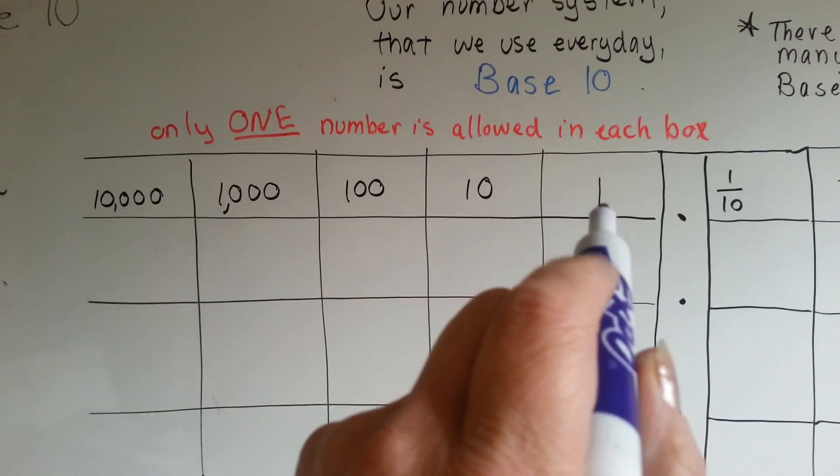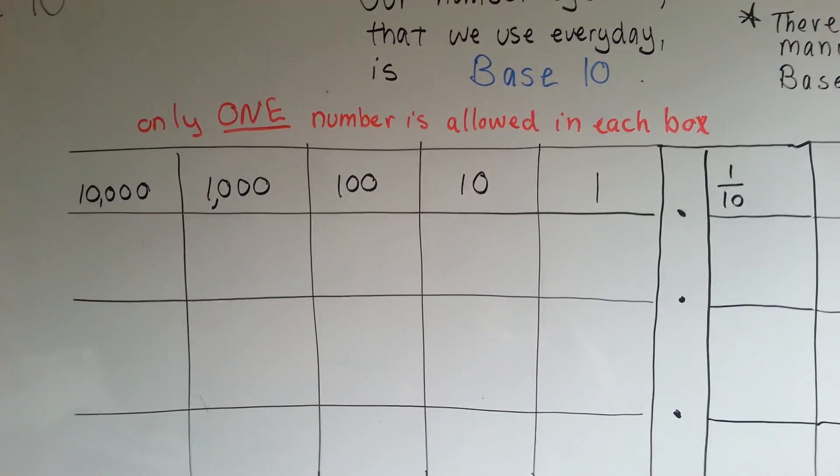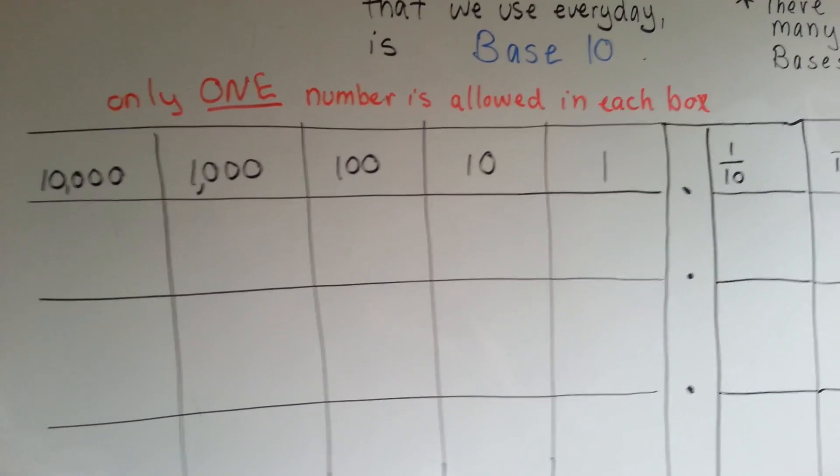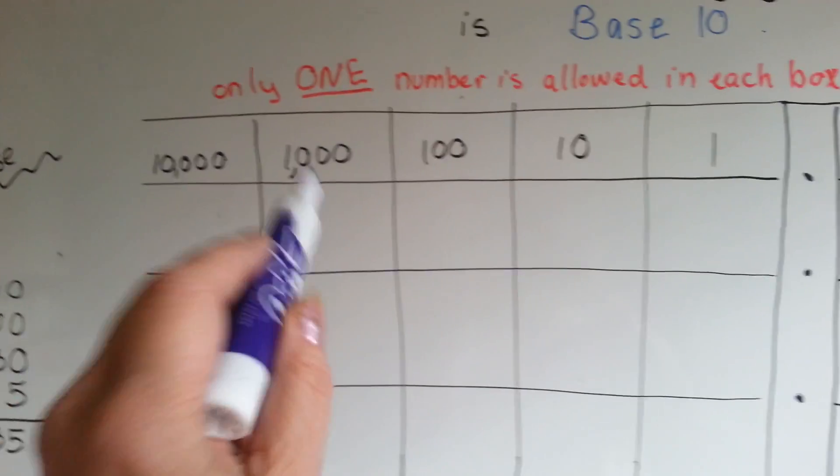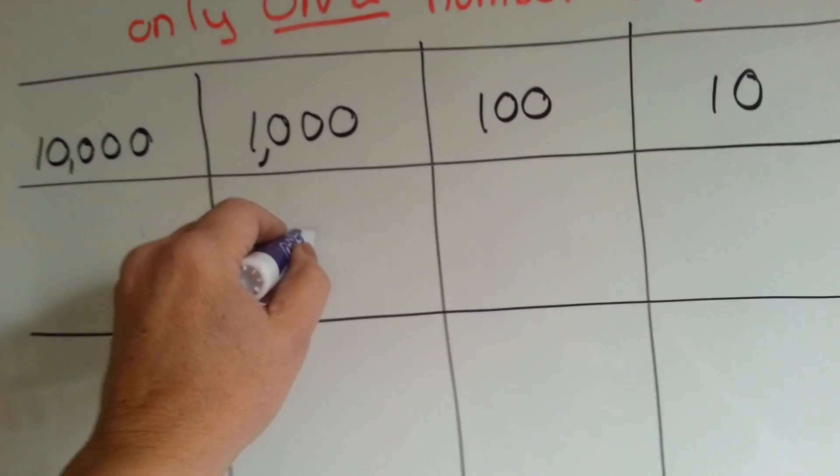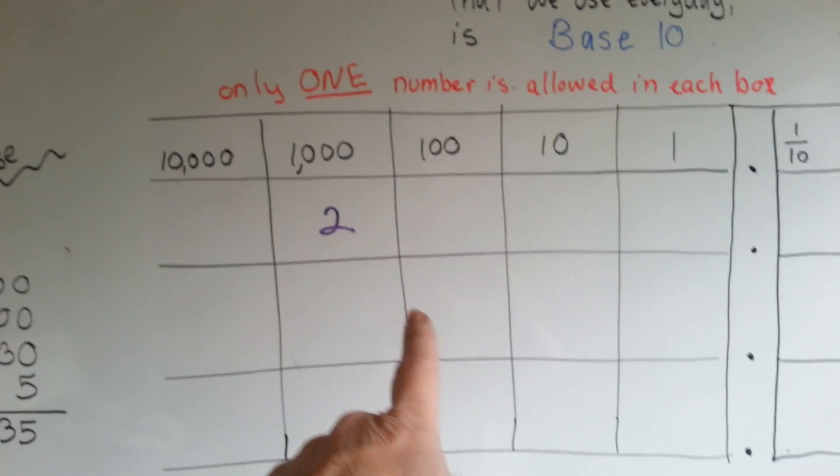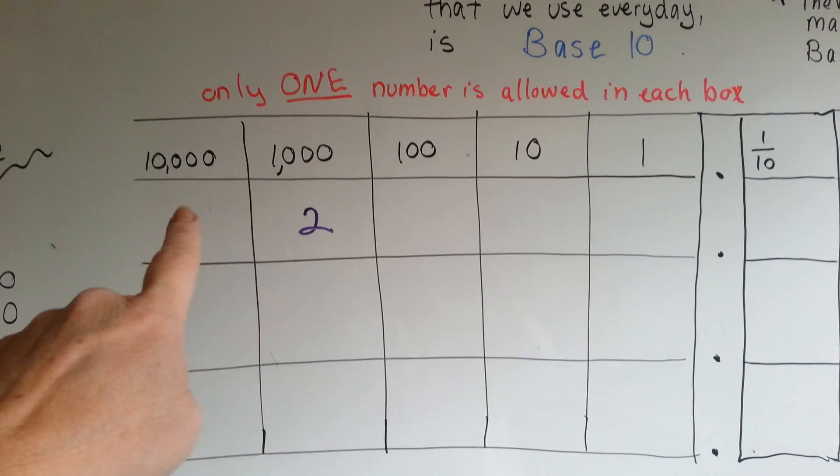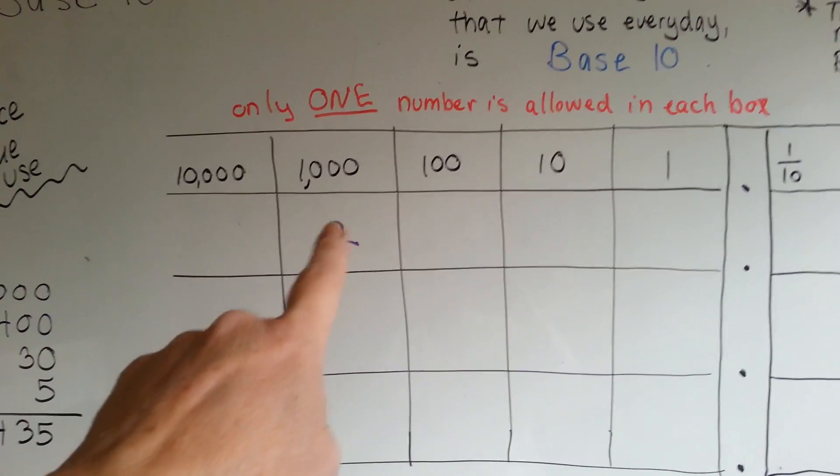So base ten means the number system and place value is based on the number ten. That's why it's called base ten. It's based on tens. Let's look at this number here. We have a two thousand. That means in the thousandth place, we have a two. Now there's only one number allowed in each box. Because if you got to two numbers, like a twelve, then in the twelve, the one of the twelve should be in this box.